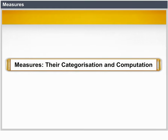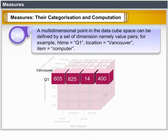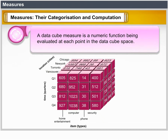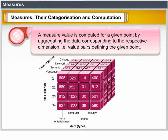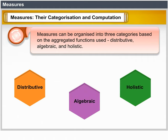Measures: their categorization and computation. A multidimensional point in the data cube space can be defined by a set of dimension-value pairs — for example, time is Q1, location is Vancouver and item is computer. A data cube measure is a numeric function that can be evaluated at each point in the data cube space. A measure value is computed for a given point by aggregating the data corresponding to the respective dimension-value pairs. Measures can be organized into three categories: distributive, algebraic and holistic, based on the kind of aggregate functions used.